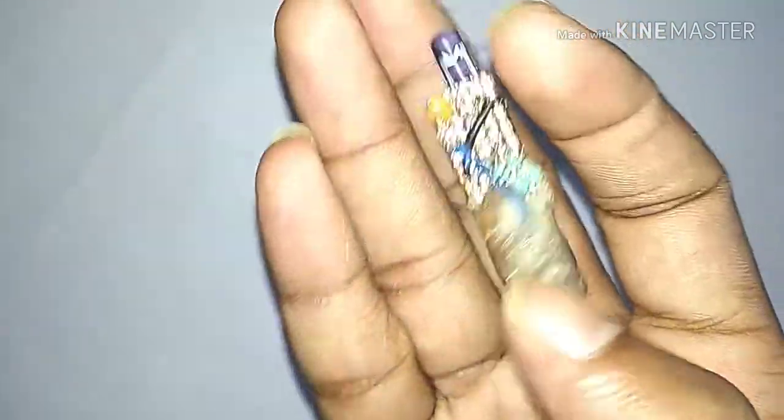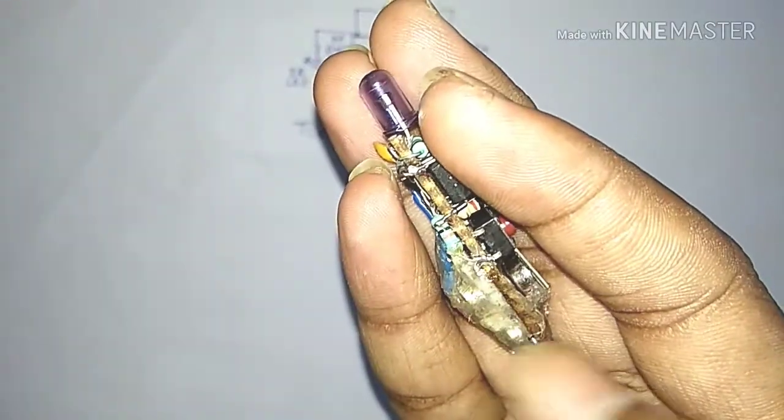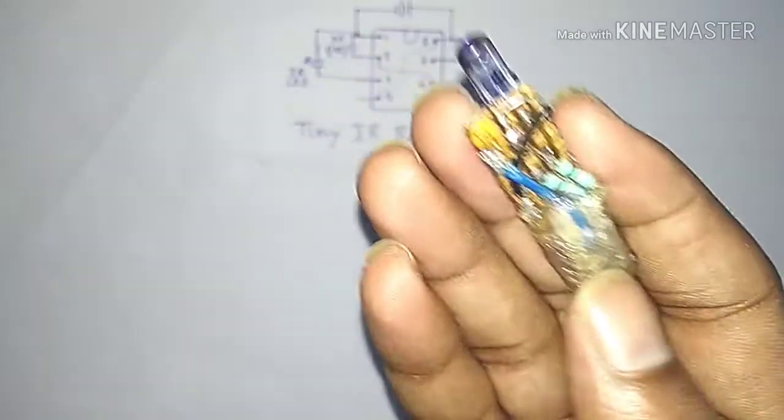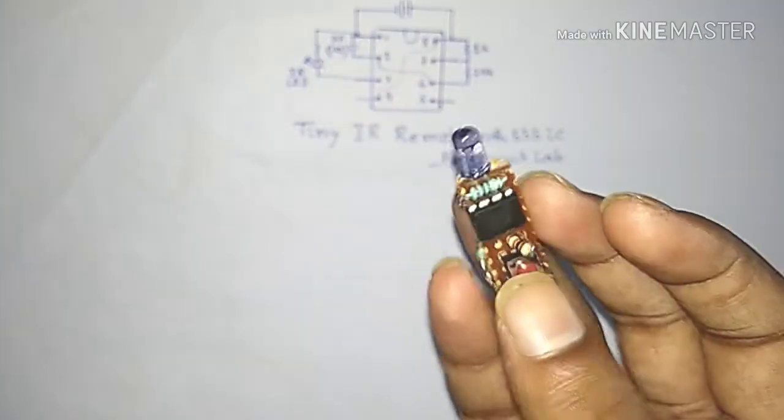And to power up this circuit, I have connected three batteries in series. Each is 1.5V. So the three batteries can generate 4.5V to power up this IC and the LED. So this project is very interesting.